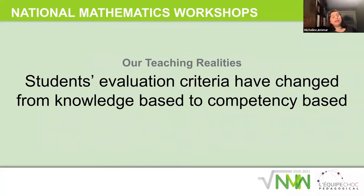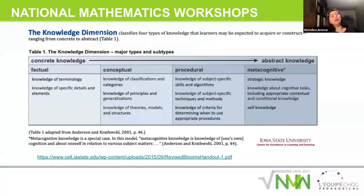The evaluation criteria changed — from a knowledge base to competency base. The knowledge dimension was more linear: factual, conceptual, procedural, and metacognitive. It was more like the old program, where you get the right answer and test the students. The metacognitive level was like the cherry — for your strong students — self-knowledge and strategic thinking. It's more like: let's get the right answer, we have an outcome, let's get to that point.